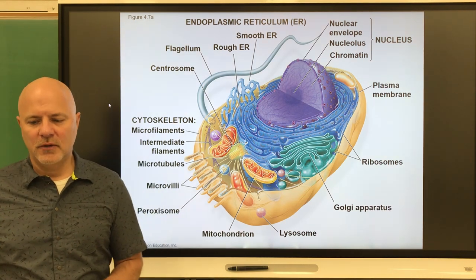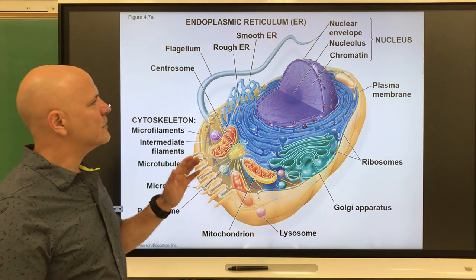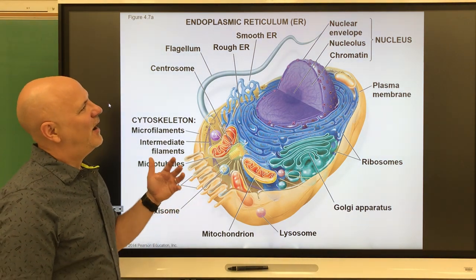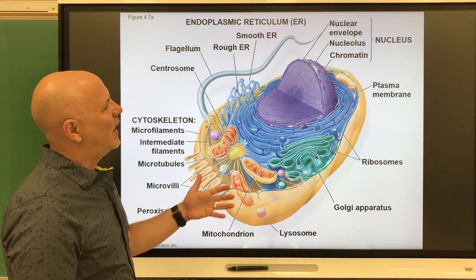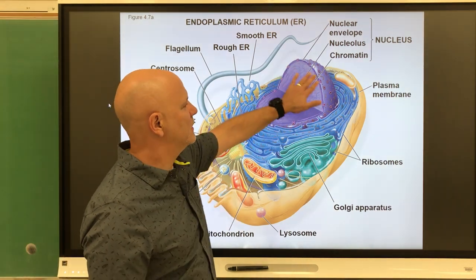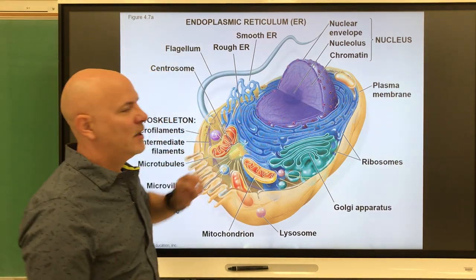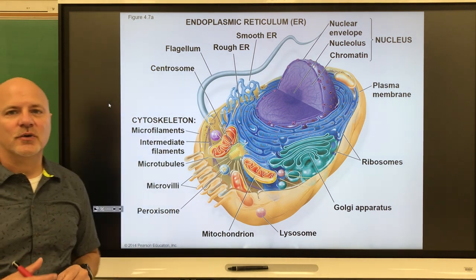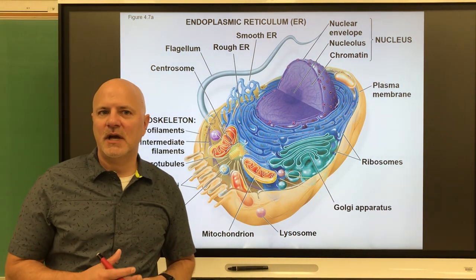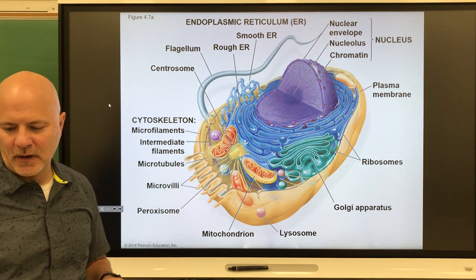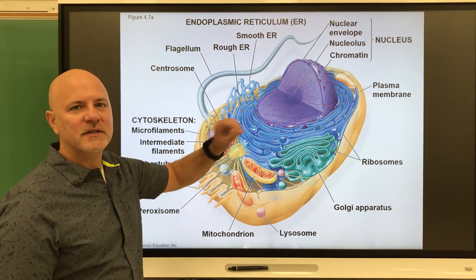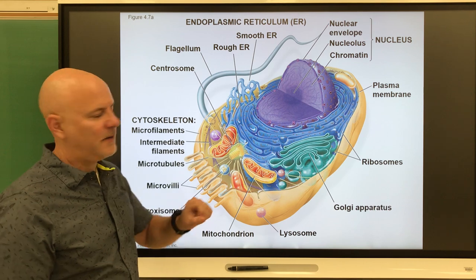Let's start off with what makes them eukaryotic cells, and that is the nucleus. The nucleus is a structure within the cell that houses the genetic material. And because it houses the genetic material, it's essentially the control center of the cell.